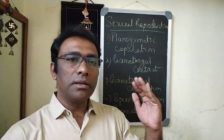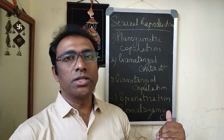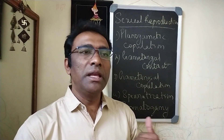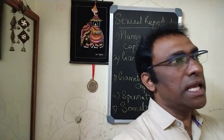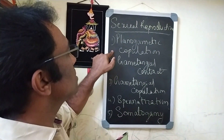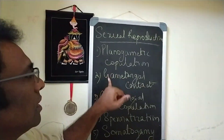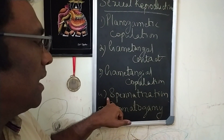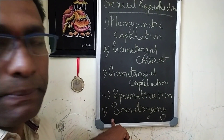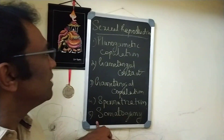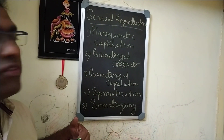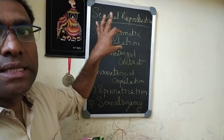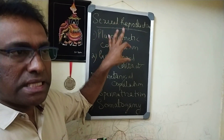Let us look into the different types of sexual reproduction, which all incorporate those three concepts: plasmogamy, karyogamy, and meiosis. The five types are: planogametic copulation, gametangial contact, gametangial copulation, spermatization, and somatogamy. Pictures will be shown to help you understand these more easily.